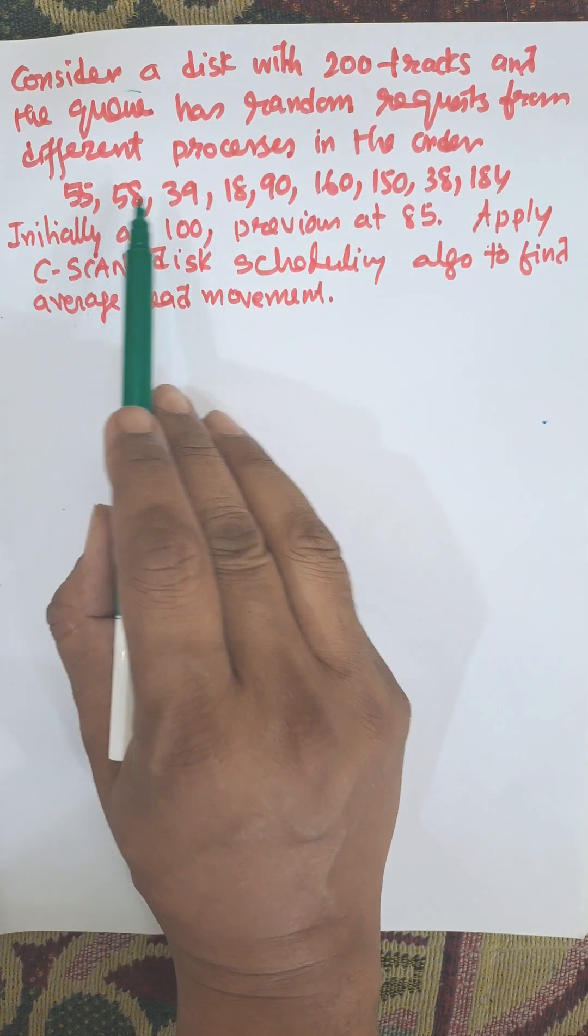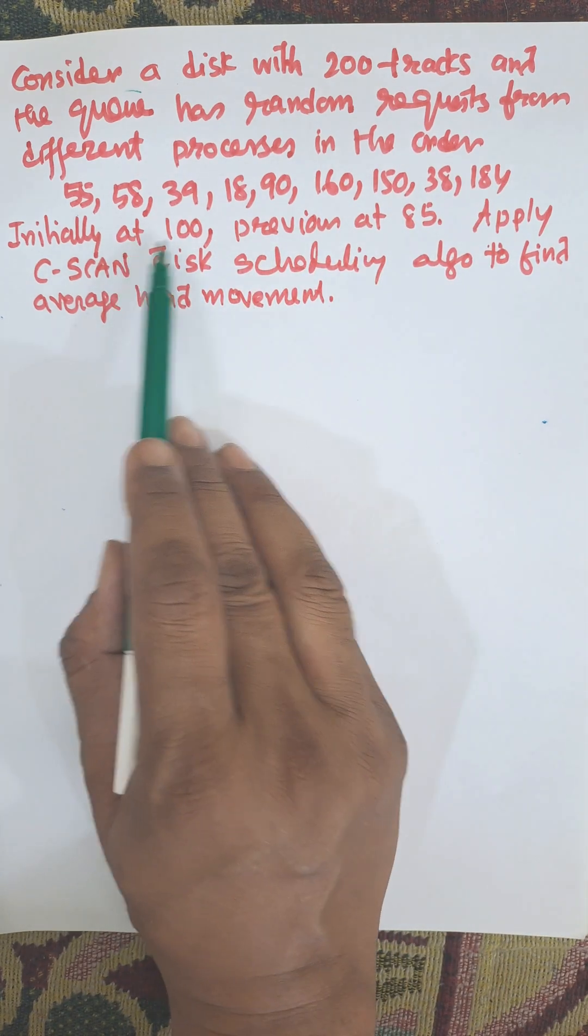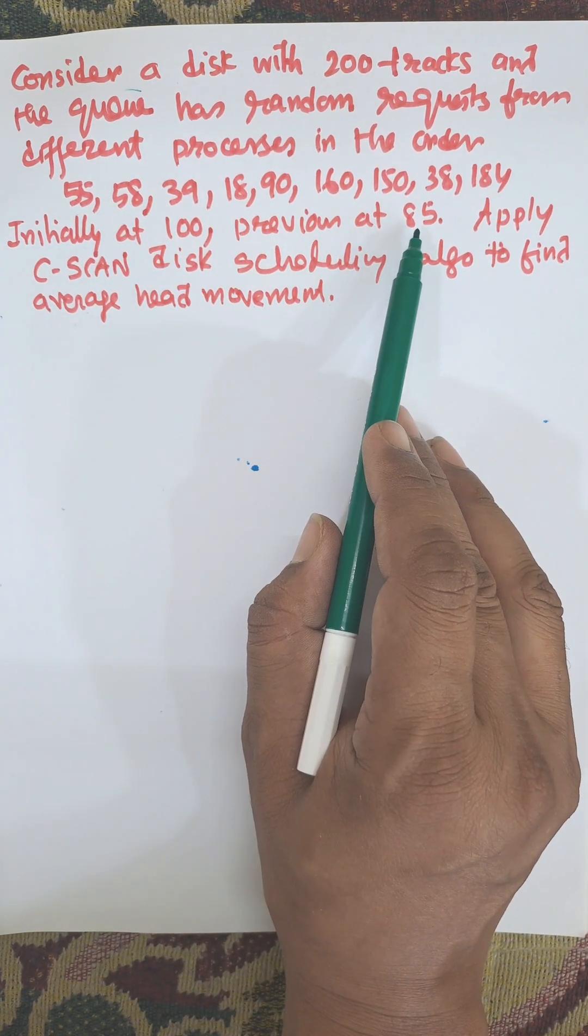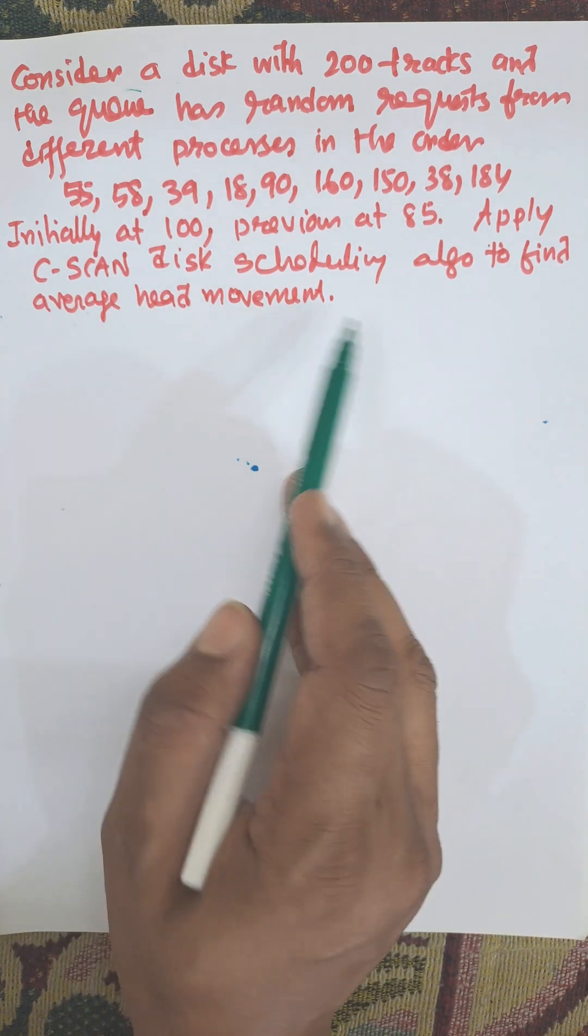55, 58, 39, 18, 90, 160, 150, 38, 184. Initially at 100, previous was at 85. Apply C-SCAN disk scheduling algorithm to find average head movement.